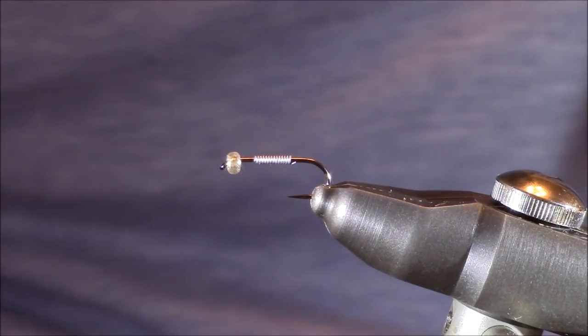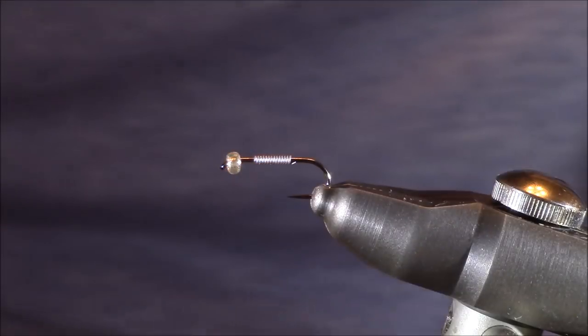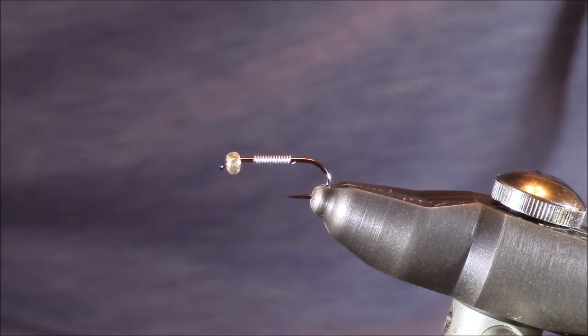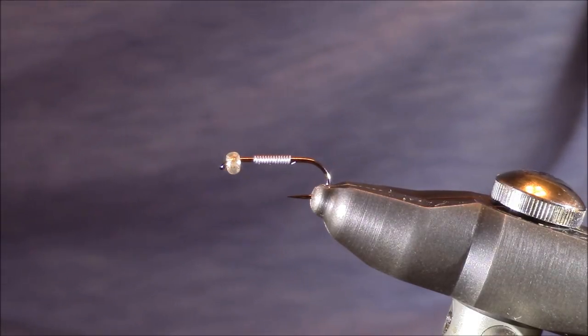Let's start tying this fly, which is a Mercury Cased Caddis. In my Stonfo Cayman vise, I have a hook from Allen Fly Fishing. This is their S402BL. It's a nymph hook that I use for so many patterns out there. It's a really great hook. The BL designation means that it's barbless.